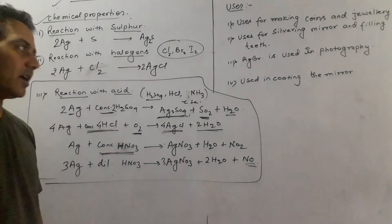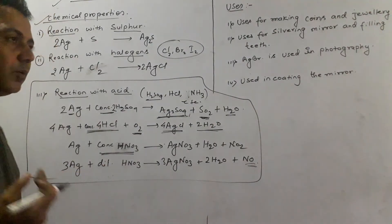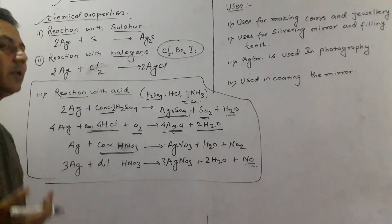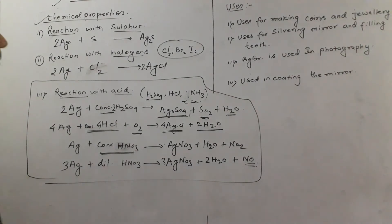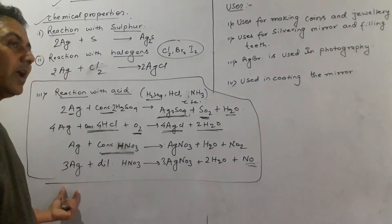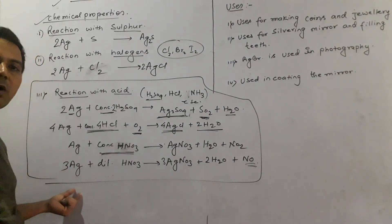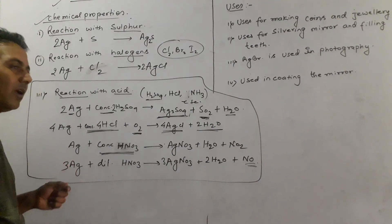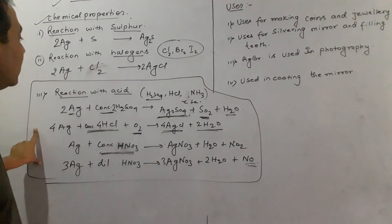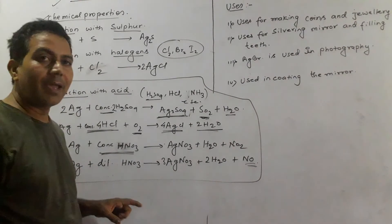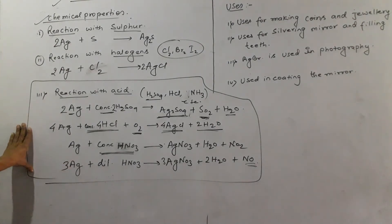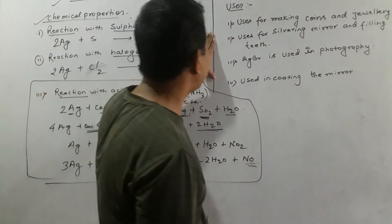In this way, these are some of the chemical reactions of silver which may be asked in the exam — although mostly ores and uses are asked. However, the examiner may sometimes want to check whether students have studied the whole chapter, so they may put one question from here. That is why we have gone through these chemical reactions.